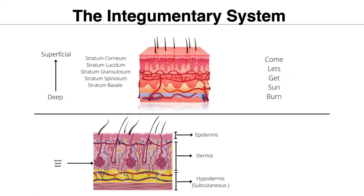The layers of skin from superficial to deep are: stratum corneum, stratum lucidum, stratum granulosum, stratum spinosum, and stratum basale. Remember the mnemonic 'Come Let's Get Sun Burned' to remember those layers in order. We then have the epidermis as the top layer, the dermis which contains all the blood vessels, and the hypodermis — also called the subcutaneous layer — which consists mostly of blood vessels and adipose tissue.